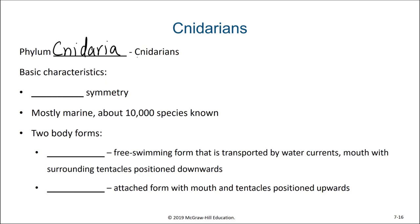Some of the basic characteristics of cnidarians is that they have radial symmetry. Most species of cnidarians are marine, but there are a few freshwater hydroids.